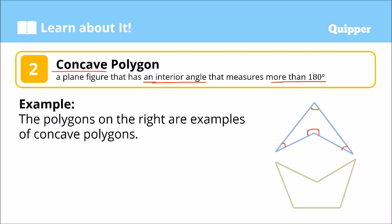Same is true with this polygon right here. This angle here is an acute angle. More than 180 degrees is what we are looking for. This is not more than 180, and this is not more than 180. But we have here this angle right here that is more than 180 degrees. Even though it is just one, we call this polygon a concave polygon.